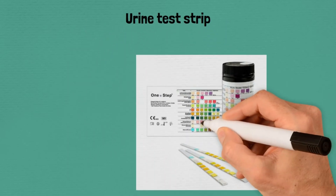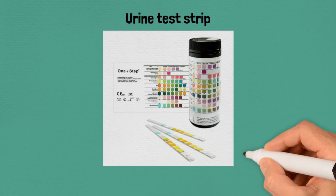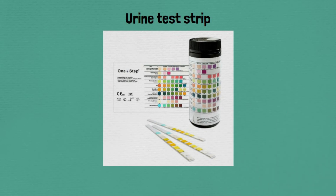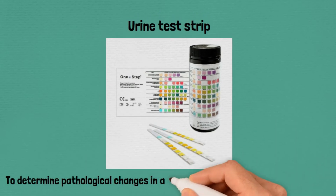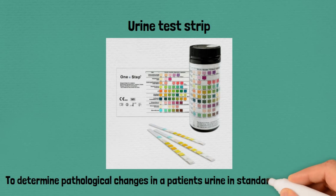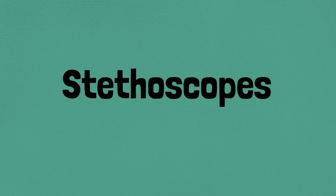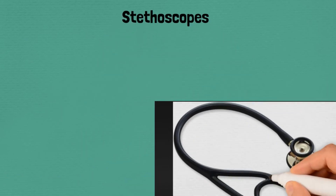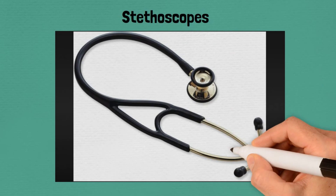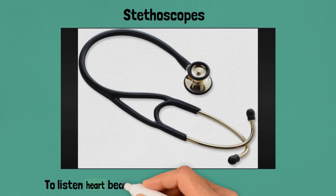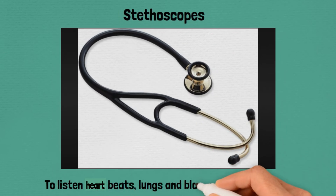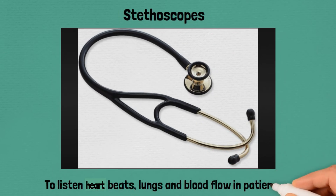Urine test strip, used to determine pathological changes in a patient's urine sample. Stethoscope, used to listen to heartbeats, lungs, and blood flow in patients.